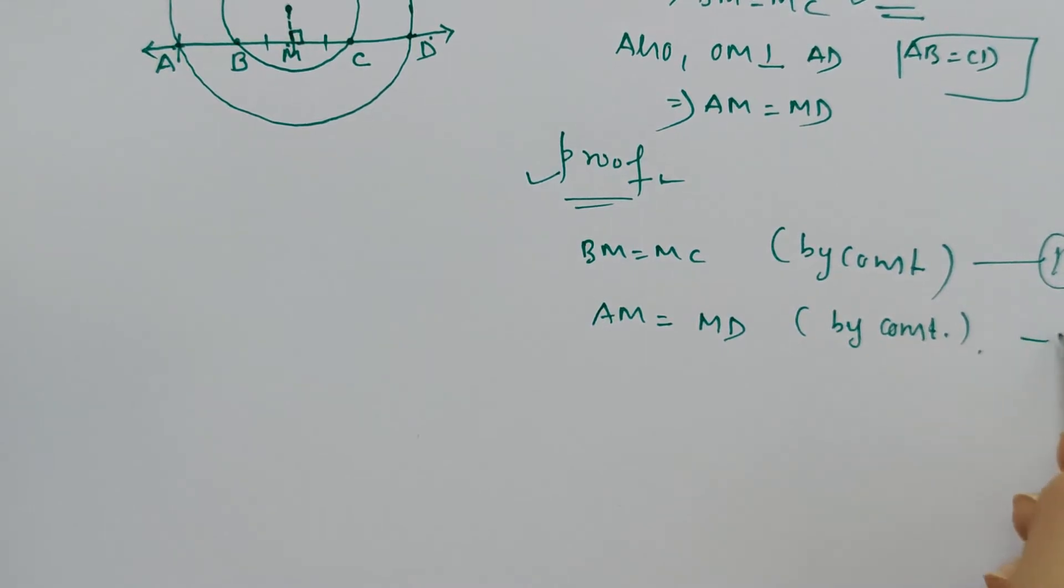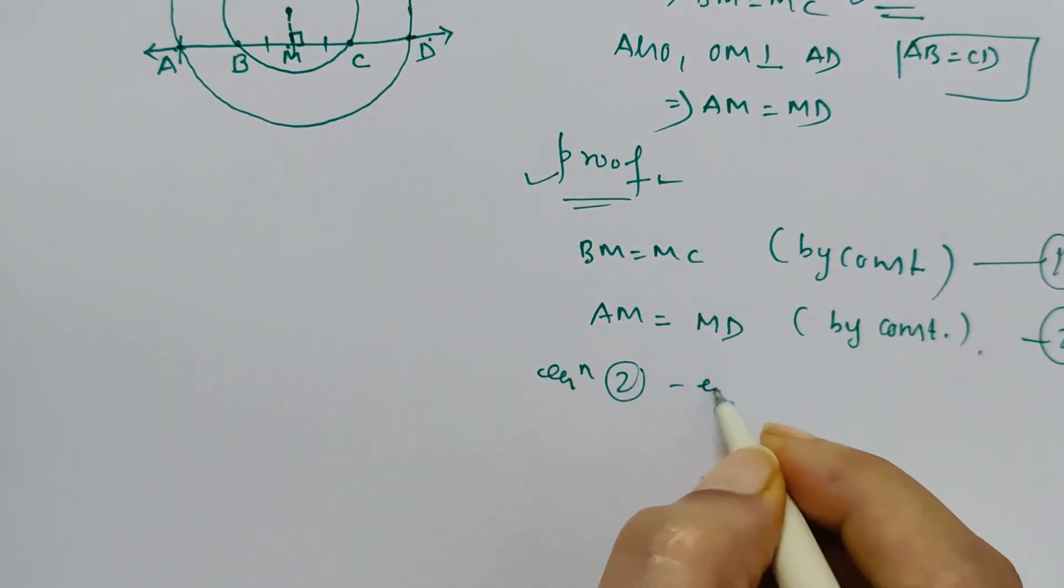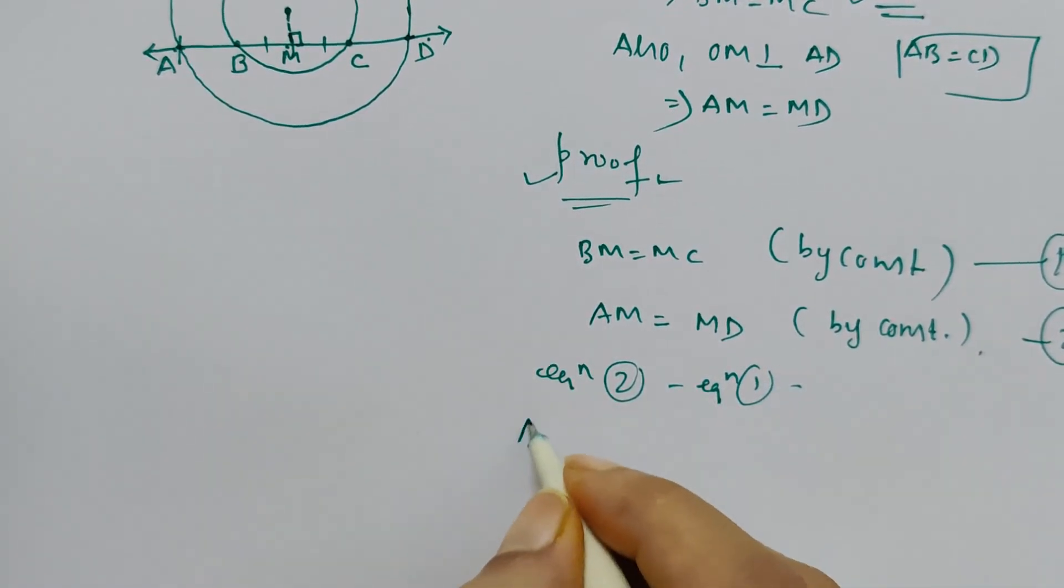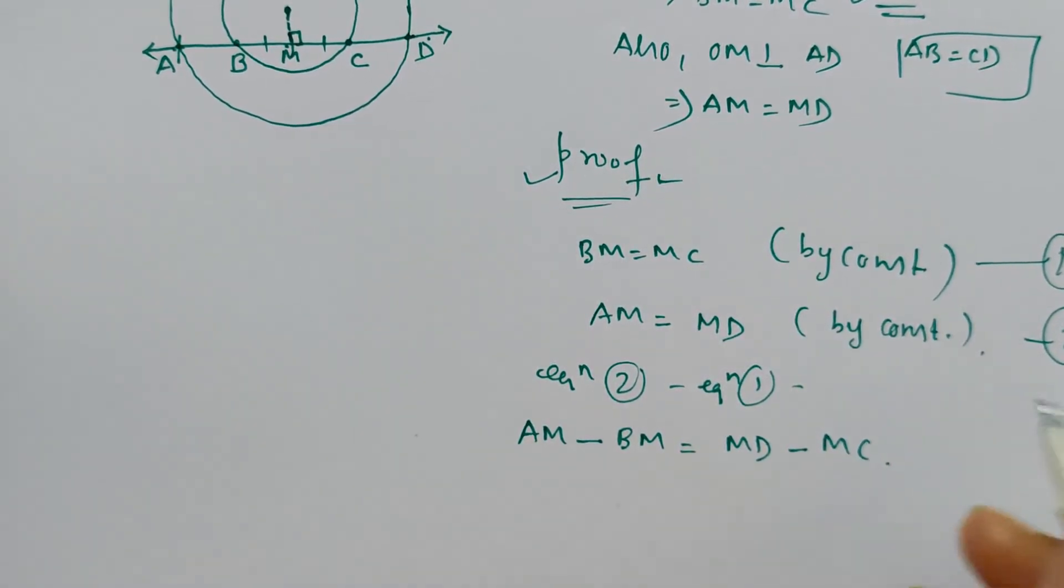Let's call these equation 1 and equation 2. By equation 2 minus equation 1, we get: AM minus BM equals MD minus MC. Now look at the figure carefully.